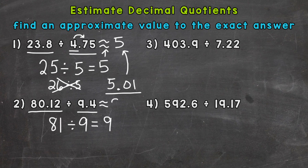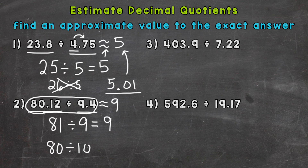Another strategy is to look at the problem as a whole and spot two compatible numbers right off the bat. For example, 80.12 is close to 80 and 9.4 is close to 10 — both compatible numbers that can give us an estimate. We didn't use specific rounding rules here, just number sense to see that we had two numbers close to compatible values. So 80 divided by 10 equals 8.